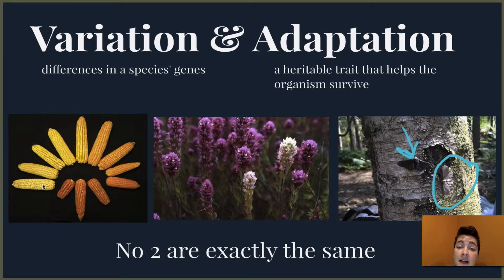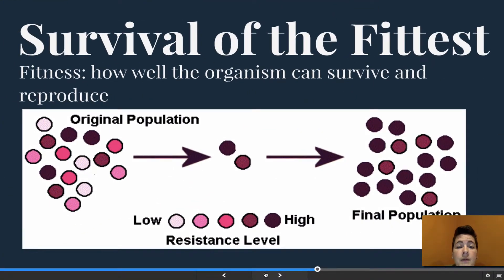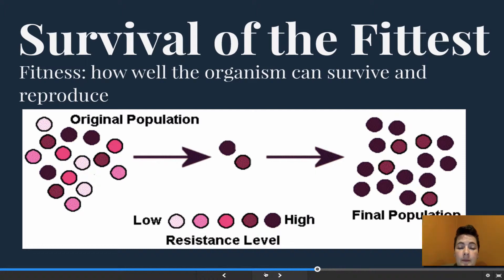We have survival of the fittest. The definition of fitness is how well an organism can survive and reproduce — so the more offspring, the more fit. If we take a look at a population of bacteria with different levels of resistance, the lighter colors have lower resistance and the darker colors have higher resistance, meaning they can resist an antibiotic better. When placed in an environment with antibiotics, only those with high resistance survive; anything with low resistance dies off and cannot reproduce. Only the genes with resistance are passed on — those are the beneficial adaptations.